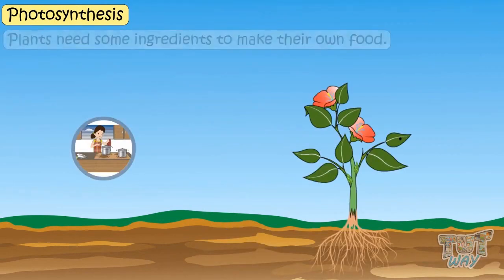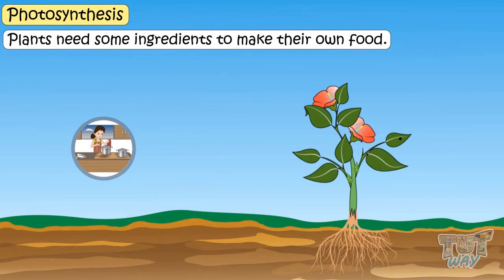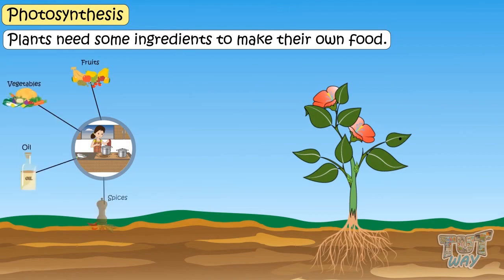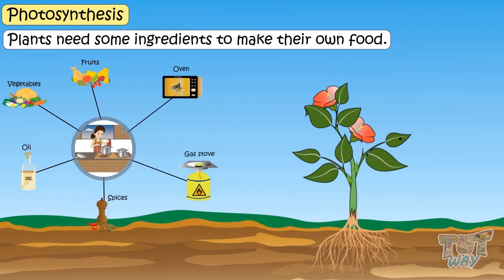The way we need ingredients to make any food, the same way plants need some ingredients to make their food. What do we need to prepare food? We need fruits or vegetables, oils, and spices to make our food. And we also need energy in the form of heat — it can be an oven or a gas stove.